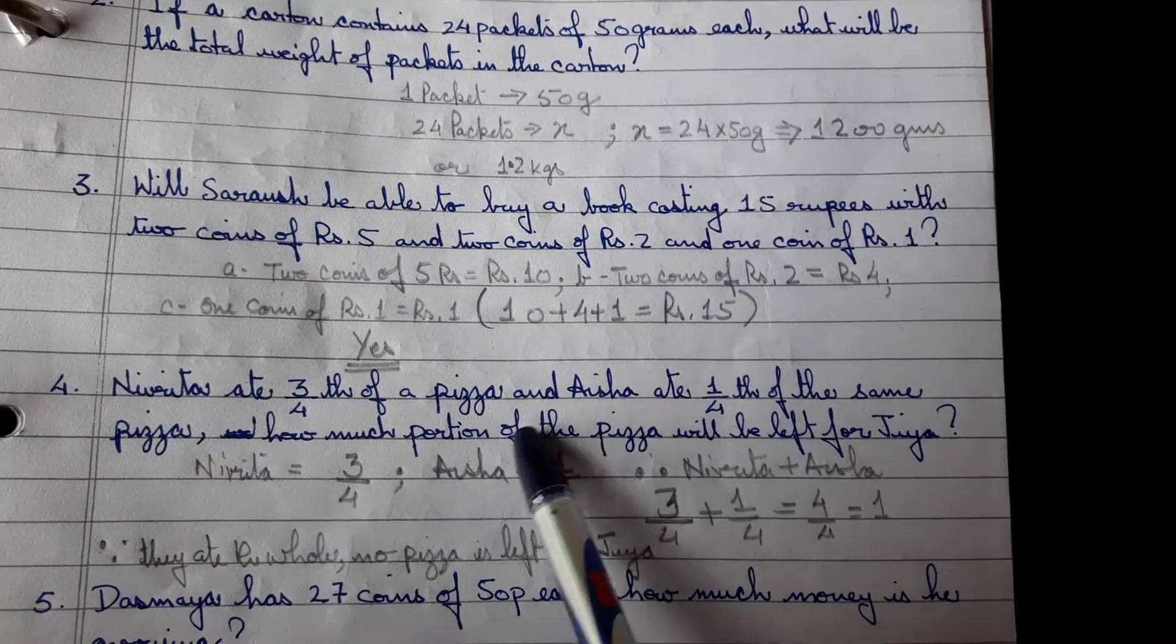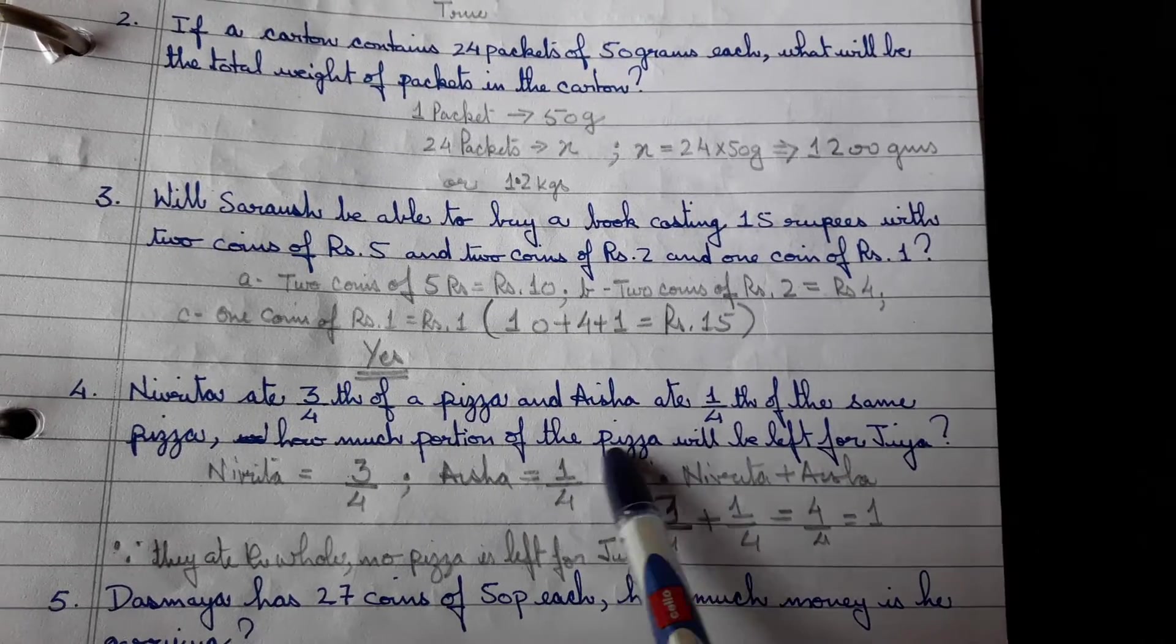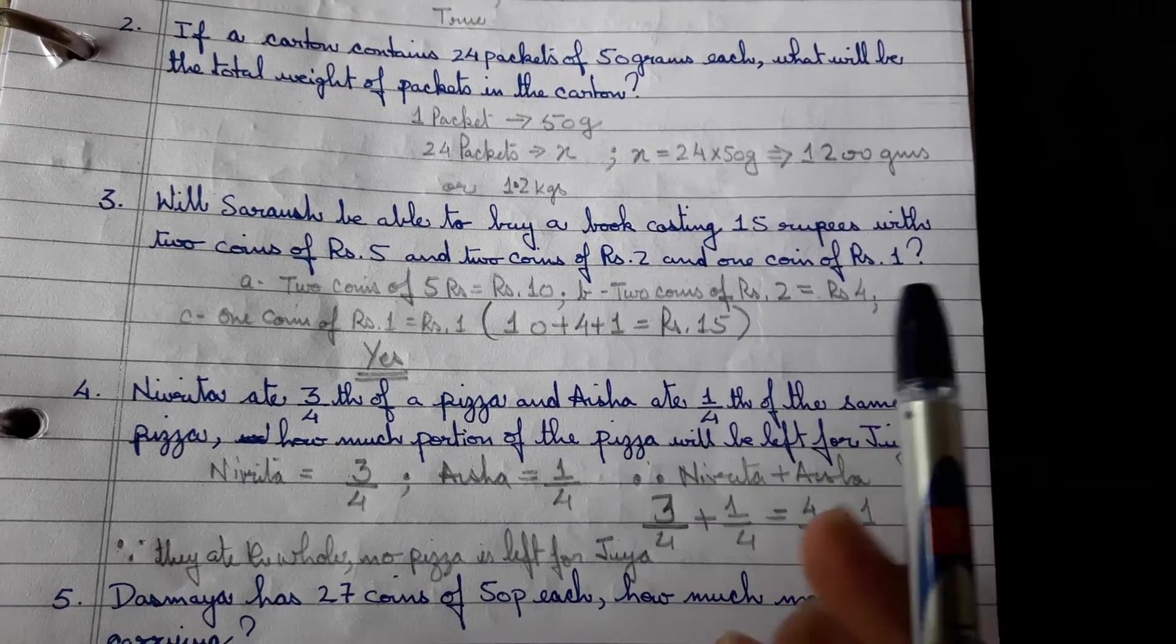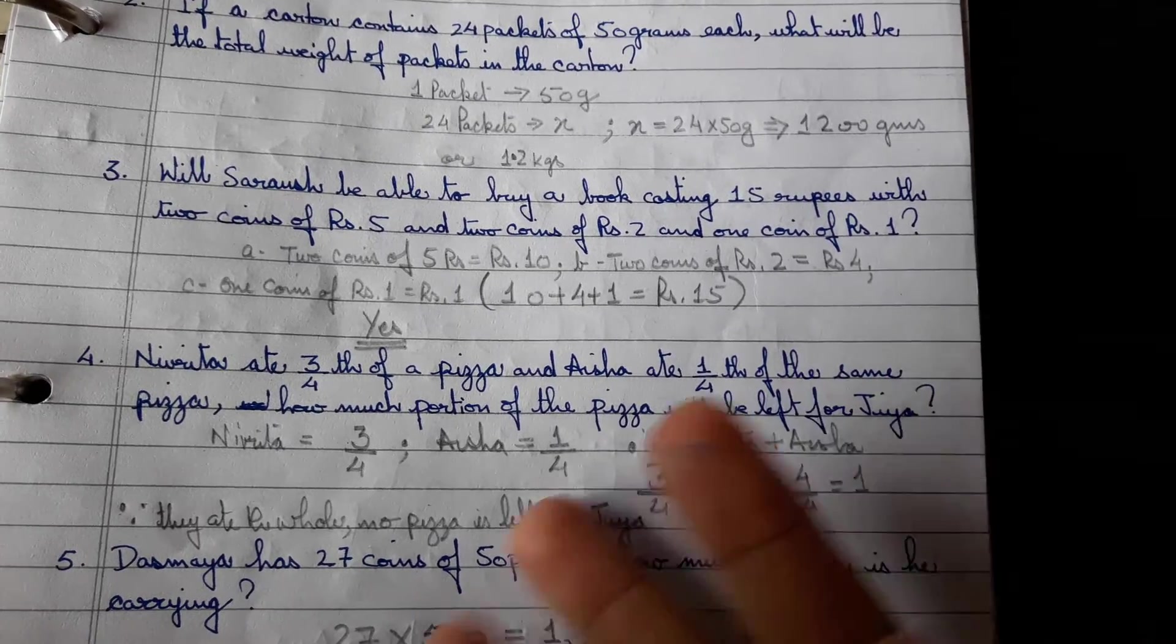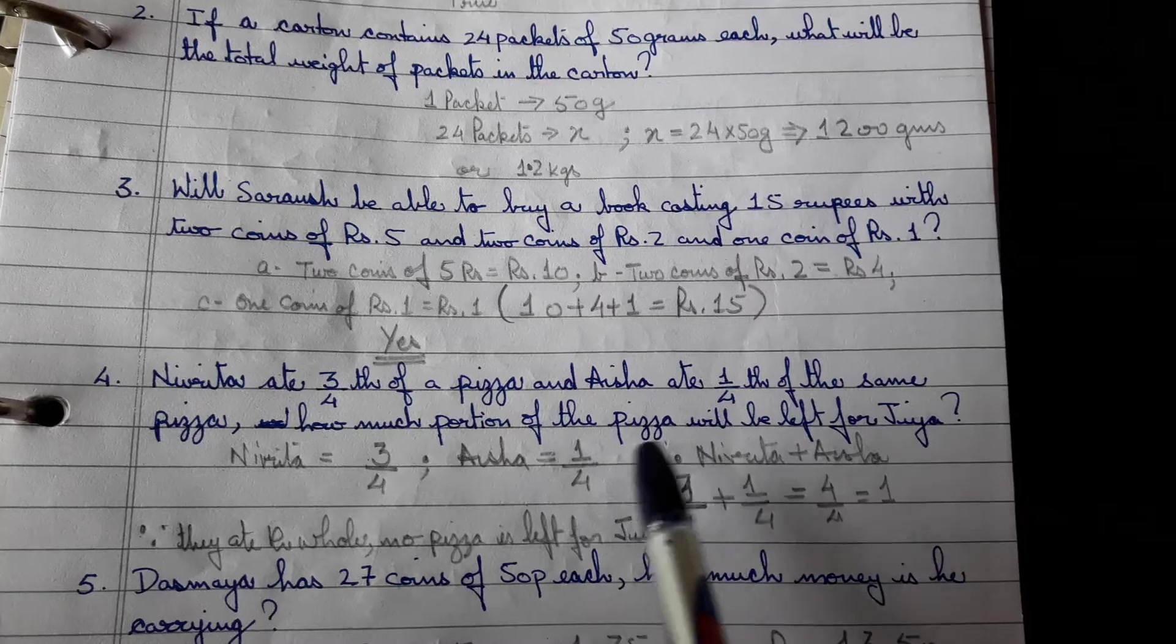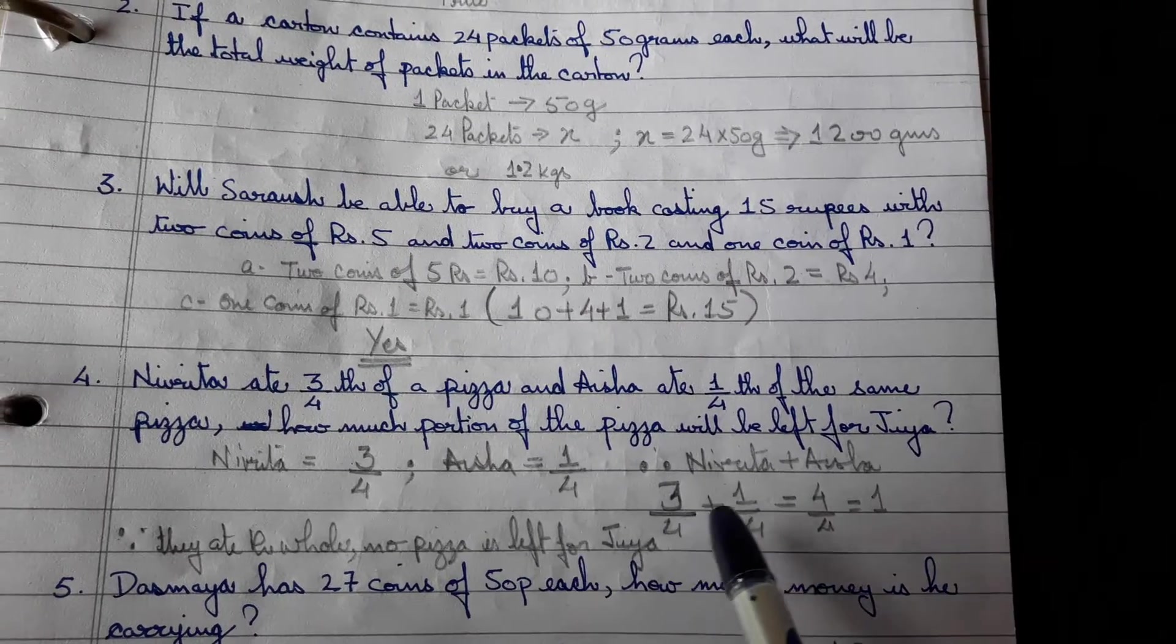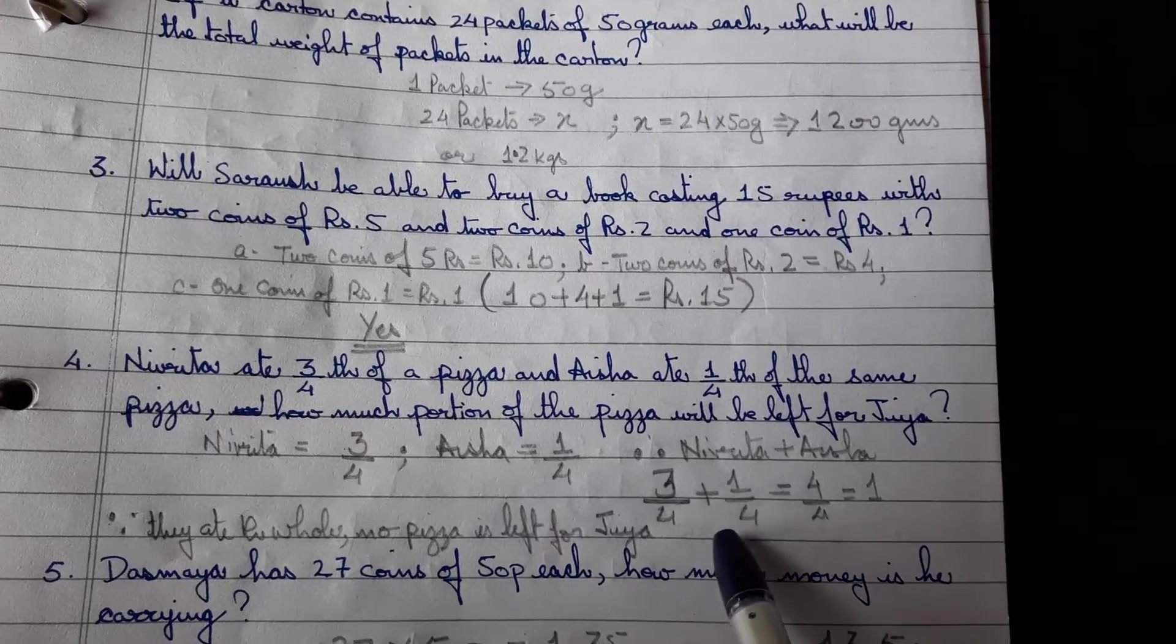Nivrita ate 3 fourths of the pizza and Aisha ate 1 fourth of the same pizza. How much portion of the pizza will be left for Jia? So you know, 3 fourths is 3 portions out of 4 portions and 1 fourth is 1 portion out of 4 portions. So add both of them, 3 plus 1 is 4. So they have eaten the entire pizza, so nothing would be left for Jia.